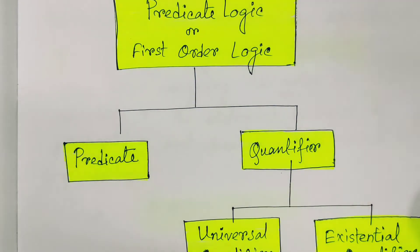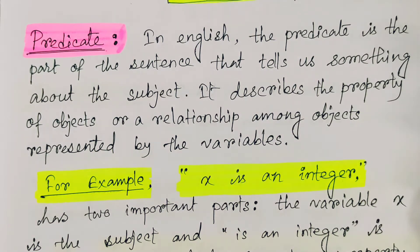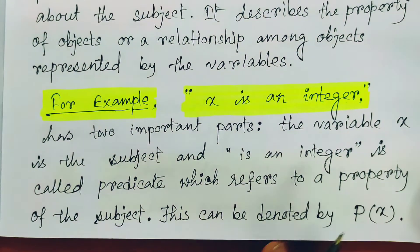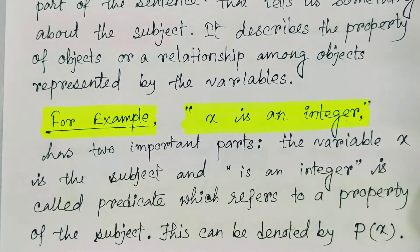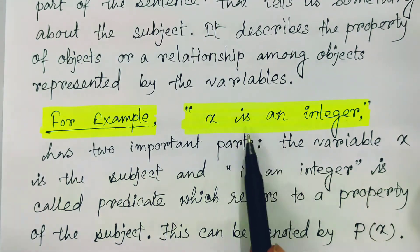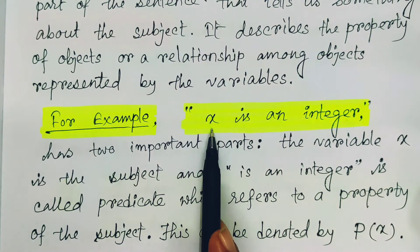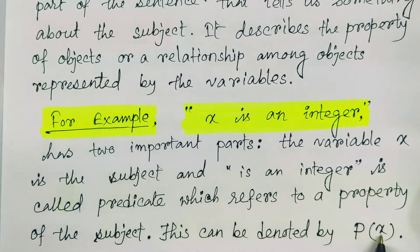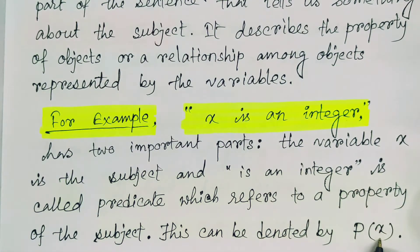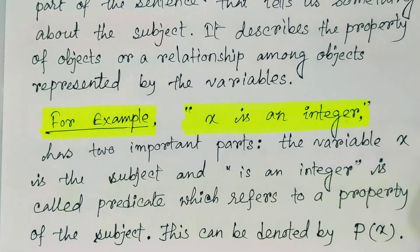So first, what is a predicate? In English, the predicate is the part of a sentence that tells us something about the subject. It describes the property of the subject or a relationship among objects represented by variables. For example, in 'X is an integer,' X is the variable part and 'is an integer' is the predicate, which refers to the property of the subject X. It is denoted by the symbol P(X), where P is the predicate and P(X) is the predicate of X.